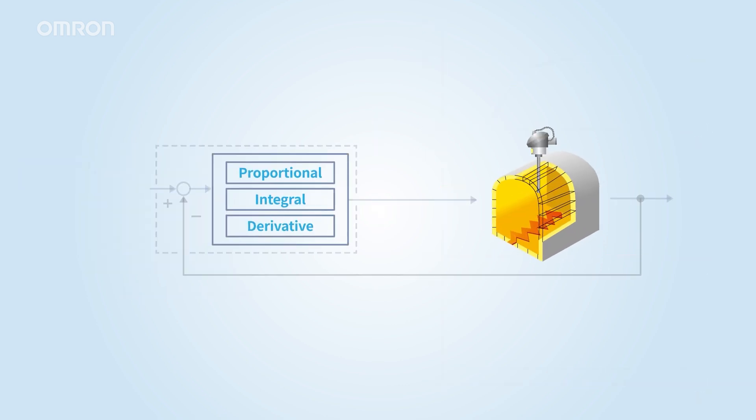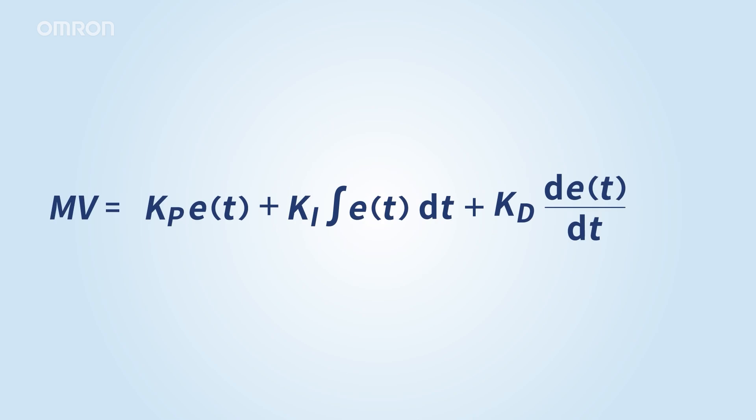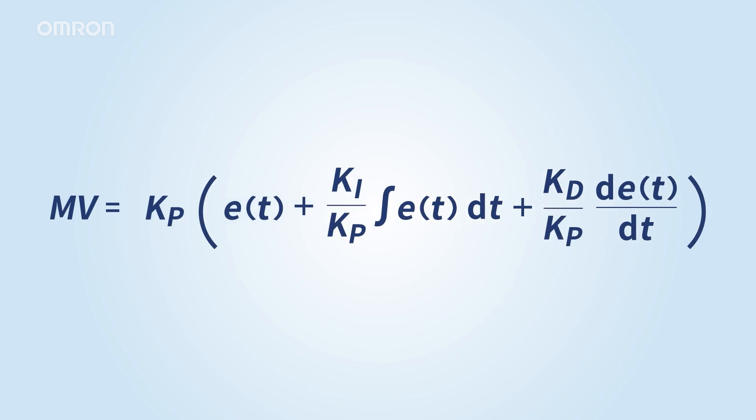To perform actual PID control, it is necessary to adjust the P, I, and D parameters. This is because the optimal P, I, and D parameters vary depending on factors such as the characteristics of your control target and heater capacity. The P, I, and D parameters refer to the P, B, TI, and TD constants derived from the PID control equation.